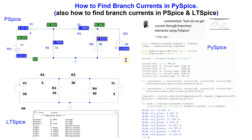Recall that circuit simulators such as PiSpice, LTSpice and PSpice are all based on the node voltage method. Hence they need a circuit ground when simulating the circuit and they naturally and easily output node voltages. In order to get branch currents, there is additional functionality provided in the simulators. Let us see how this can be done in more detail.